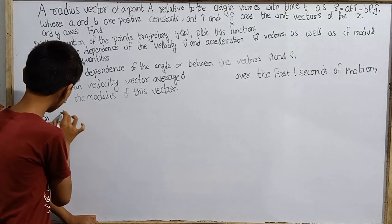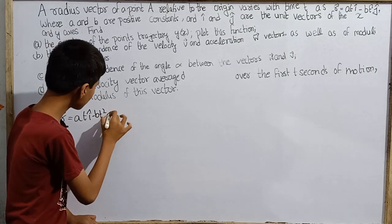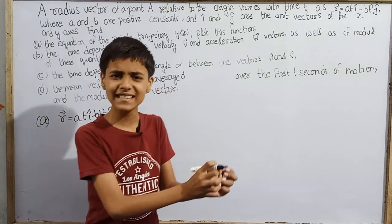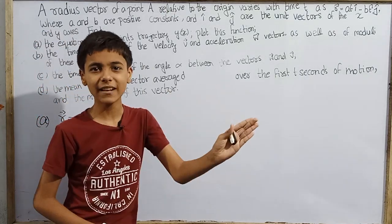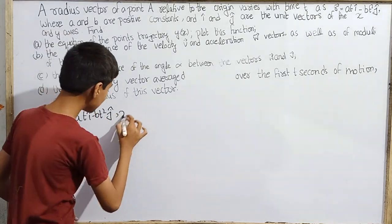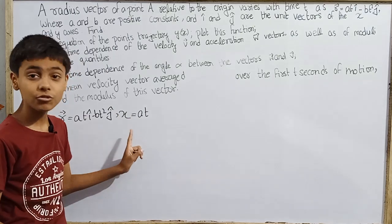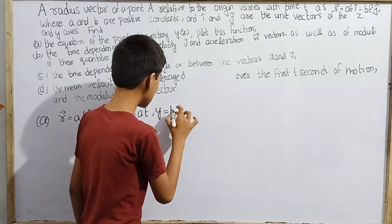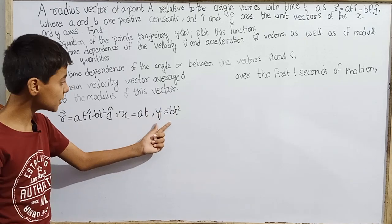For part (a), we have vector r equals a·t·î minus b·t²·ĵ, where î and ĵ are unit vectors along the x and y axes. So we can directly read off the coordinates: x equals a·t and y equals minus b·t².